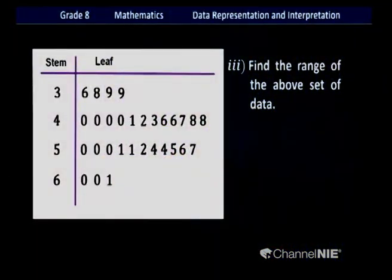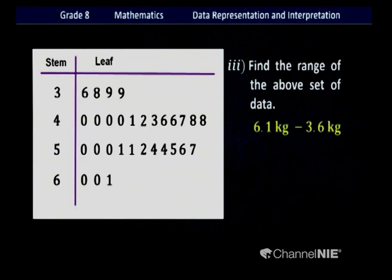Then we will find the range of this data. We know the greatest value is 6.1 and the least value is 3.6. To get the range we subtract the least value from the greatest value: 6.1 kilograms minus 3.6 kilograms gives 2.5 kilograms.